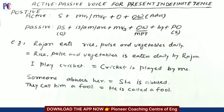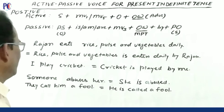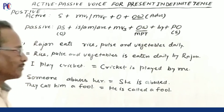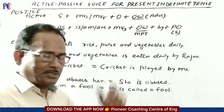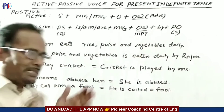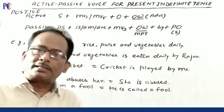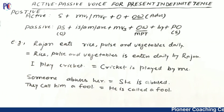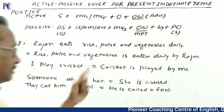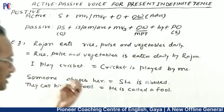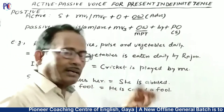Now let us see some examples in positive sentences. The first example is: 'Rajan eats rice, pearls and vegetables daily.' The object is rice, pearls and vegetables — make this the passive subject. Rice, pearls and vegetables together refer to food, and in the present indefinite the verb to be will be 'is' for third person singular. So: 'Rice, pearls and vegetables is eaten daily by Rajan.' You can also say: 'Rice, pearls and vegetables is eaten by Rajan daily.' No problem.